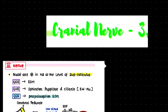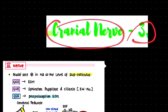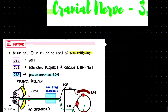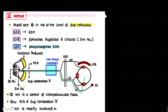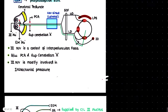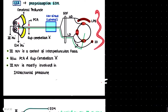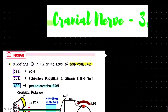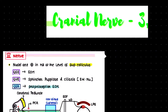The topic of discussion is cranial nerve number three, the oculomotor nerve. In this lecture, we will talk about the columns where these cranial nerves are present, the course of the cranial nerve, the distribution of the cranial nerve, and what will happen if there is injury in the cranial nerve.